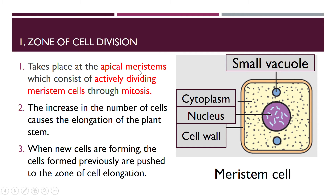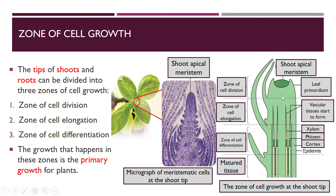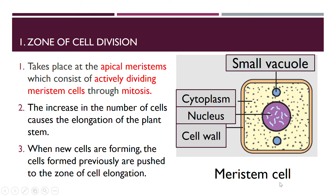The apical meristem is actively dividing. When new cells are forming, the cells formed previously are pushed to the zone of elongation. This means when division has produced many cells and there is no more space, they are pushed further along. This is what causes the plant to elongate — cell numbers increase. In the zone of cell division, you can see the nucleus and the cytoplasm; the vacuole is still small and there is a cell wall.